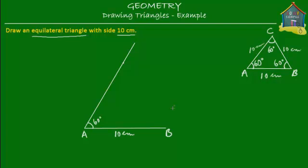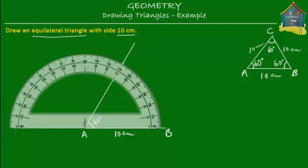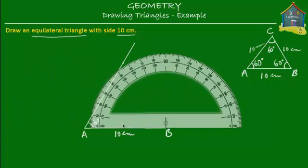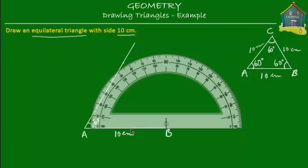Next I also know that angle B is also equal to 60 degrees. So I take the protractor again, move it to B, place it here like this. Mark 60 degrees here from B. Then draw a straight line starting from B, passing through 60 degrees. And that's the end of it.